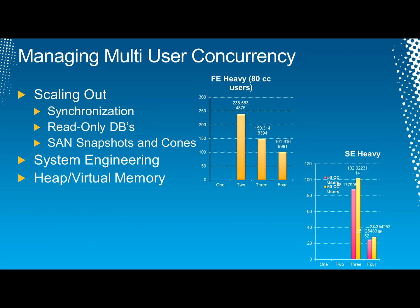We also need to manage multi-user concurrency better. As we begin to scale out, we can do things to keep multiple copies of our database in sync. We can look at read-only databases and use SAN snapshots and clones — not cones, waffle cones aren't really going to help you, but you can get one if your scale-out solution works.